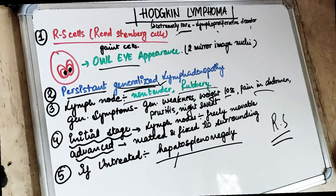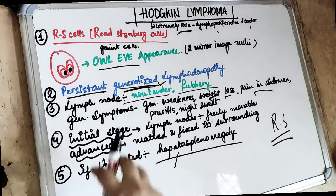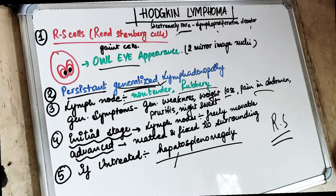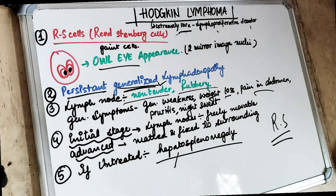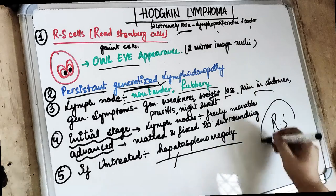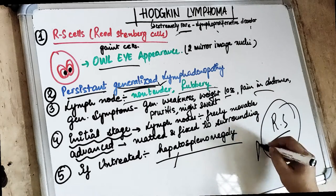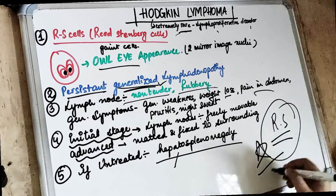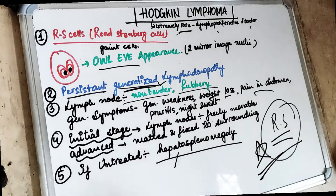So this is about Hodgkin lymphoma. How do we treat it? We do radiotherapy and chemotherapy. This is how we treat Hodgkin lymphoma, which is an extremely rare lymphoproliferative disease. Please always remember the Reed-Sternberg cells in Hodgkin lymphoma.